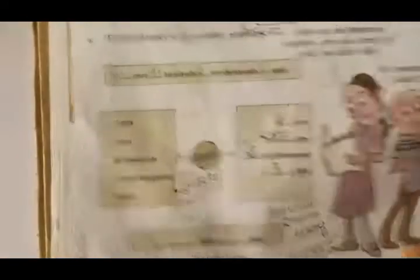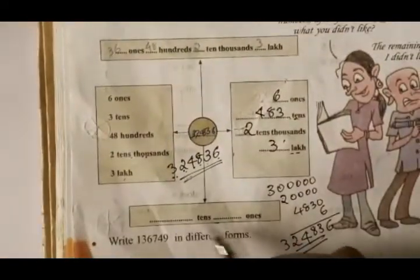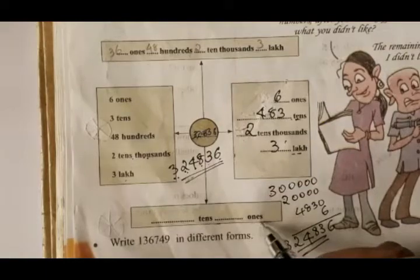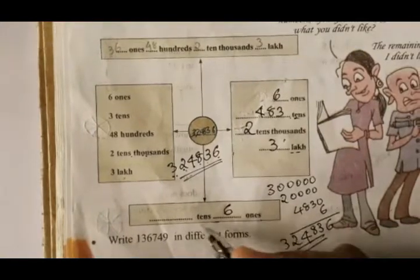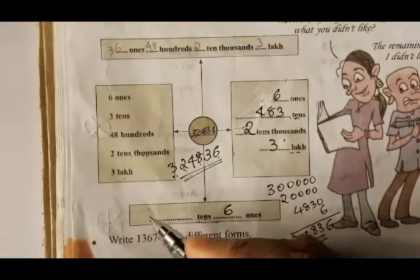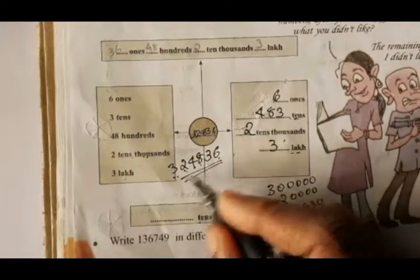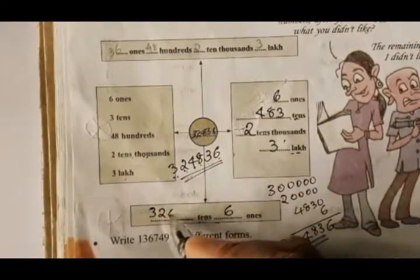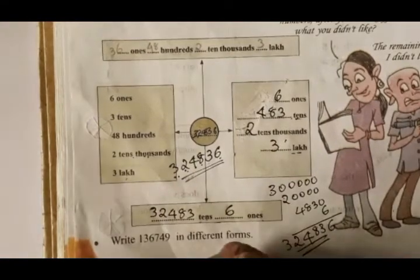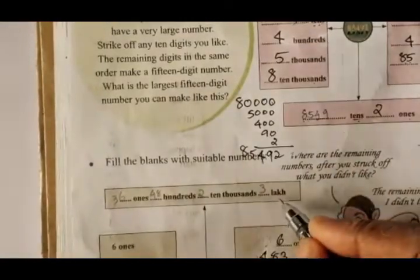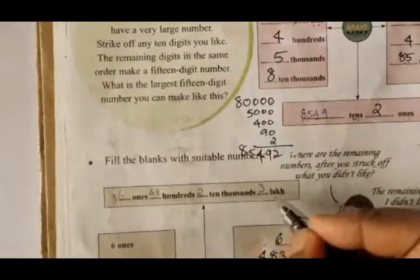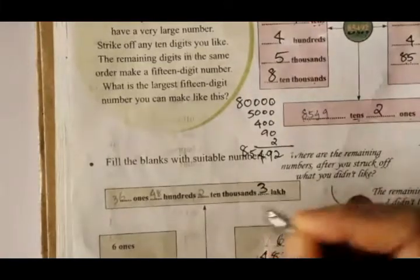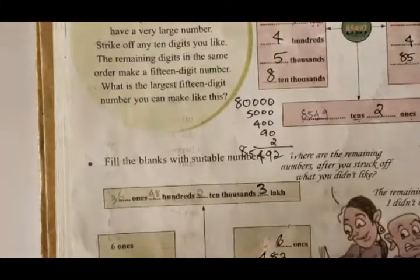Let's look at the other group. Let's look. Once. 6 ones, very good. 10s. 100, 1,000, 1,000, 1,000. 3, 2, 4, 8, 3. This is 10s. This group is 1,000. 1,000, 1,000. 3,000. 1,000. 2,000. 1,000.